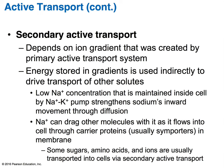In secondary active transport, the process depends on the ion gradient created by the primary active transport system. The energy stored in that gradient is used indirectly to drive the transport of other solutes. For example, the low sodium concentration maintained inside the cell by the sodium-potassium pump strengthens sodium's inward movement by diffusion. Because of this gradient, sodium is able to drag other molecules with it as it re-enters the cell through a carrier protein — usually a symporter. Sugars, amino acids, and other ions are transported this way.